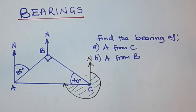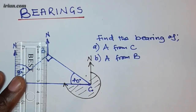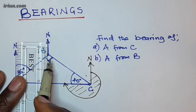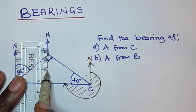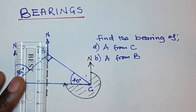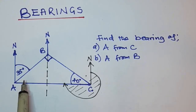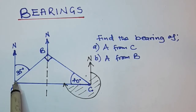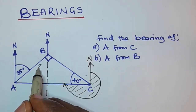First of all, we'll consider extending this north line here so that we can use the properties of alternate angles. When you look at this north line and this north line, they are parallel lines, and this is a transversal. So this angle here is going to be equal to this angle, because they are alternate angles — giving us 35 degrees here as well.